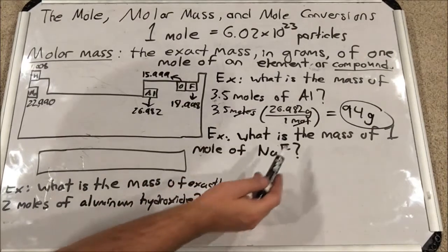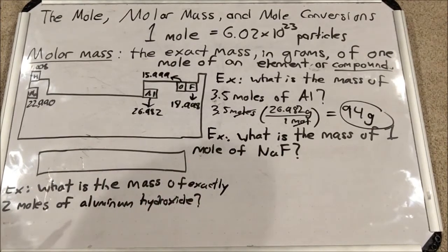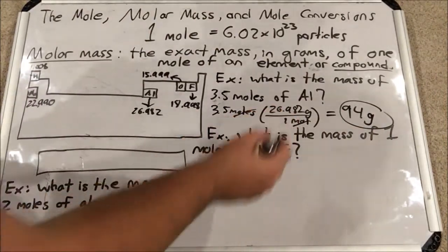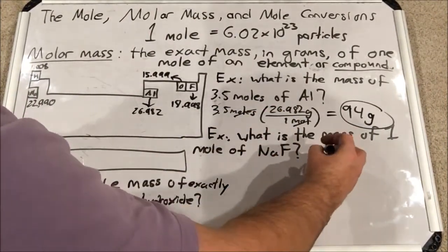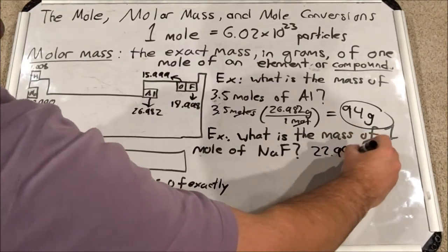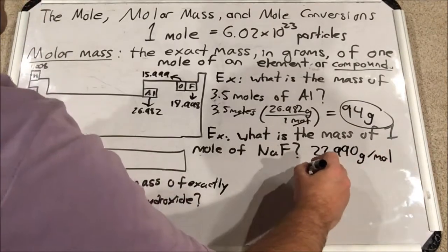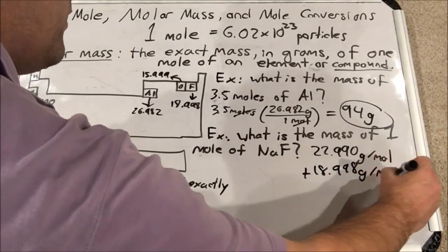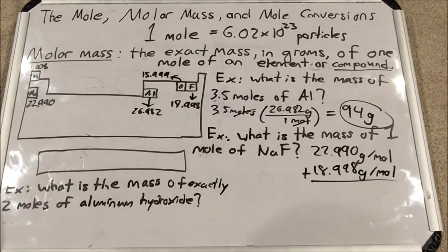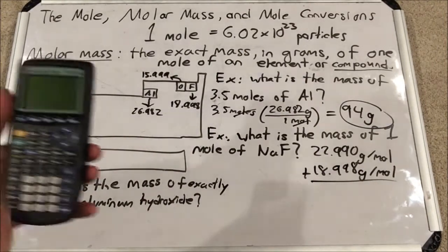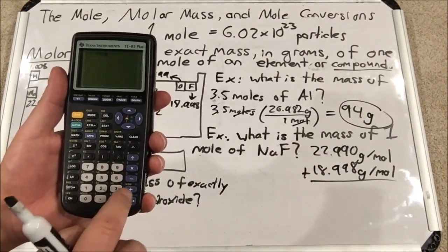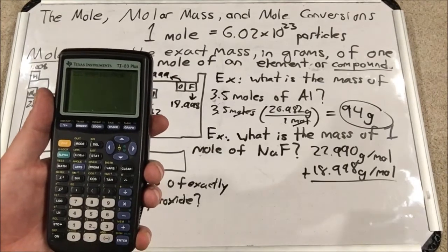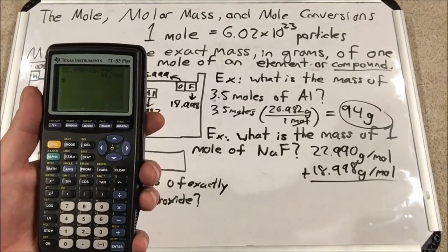Since it's one mole, I don't have to do any multiplying — just some adding. So I add 22.990 grams per mole for sodium to 18.998 grams per mole for fluorine. I'm not rounding in the middle of a problem; I'll round at the end due to significant figures. That gives me 41.988.